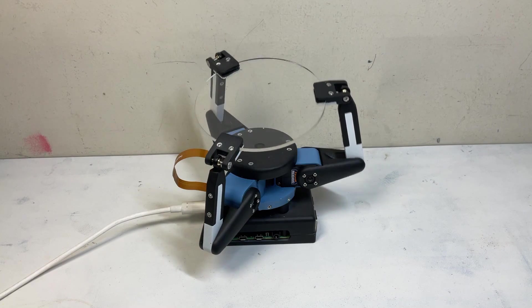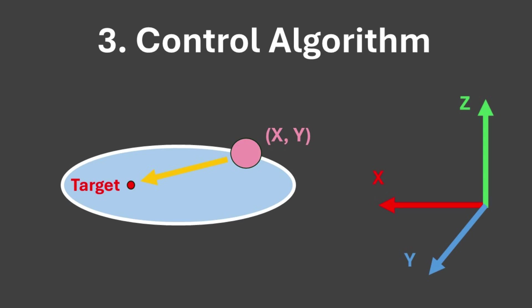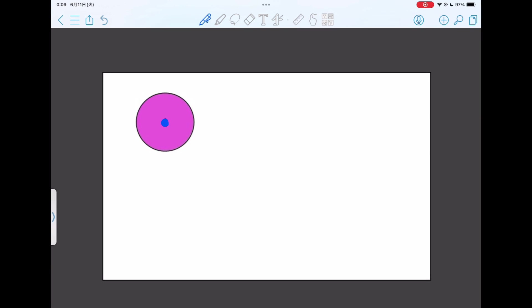Now that the platform tilt can be freely controlled and the ball coordinates can be accurately obtained, the last thing needed for ball balancing is an algorithm to move the ball to the target coordinates. Suppose the following image is acquired by the camera. The ball's location is at these coordinates and the target coordinates are here. To move the ball to the target coordinates, the platform should be tilted in this direction.